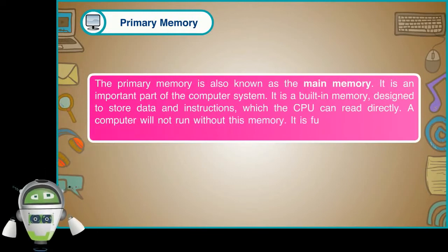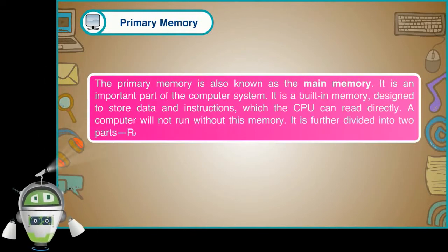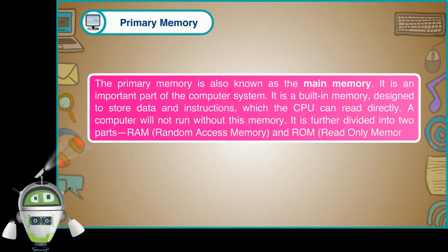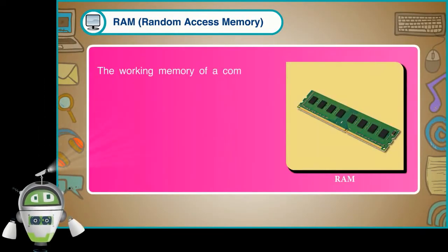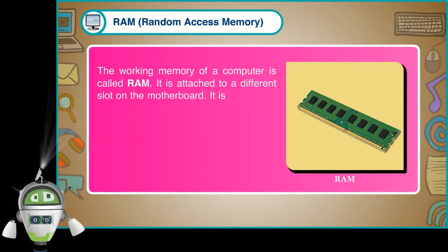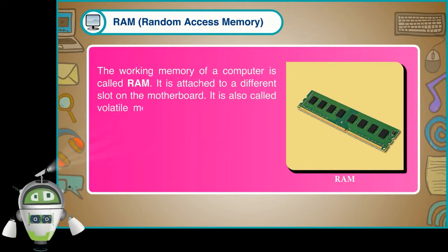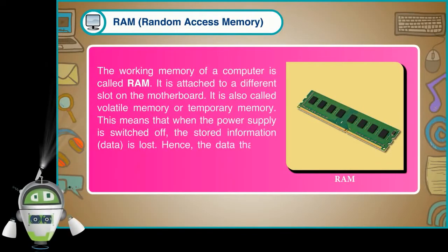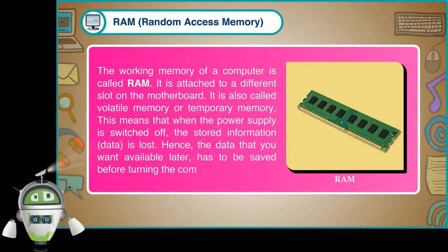Primary memory is further divided into two parts: RAM (Random Access Memory) and ROM (Read-Only Memory). RAM is the working memory of a computer. It is attached to a different slot on the motherboard. It is also called volatile memory or temporary memory. This means that when the power supply is switched off, the stored information and data is lost. Hence, the data that you want available later has to be saved before turning the computer off.